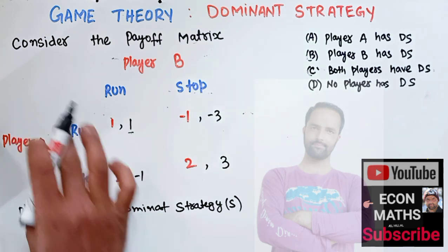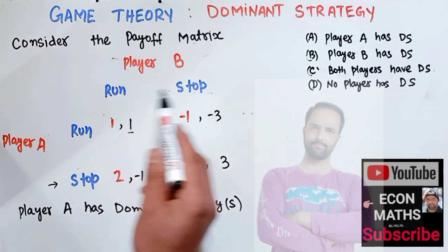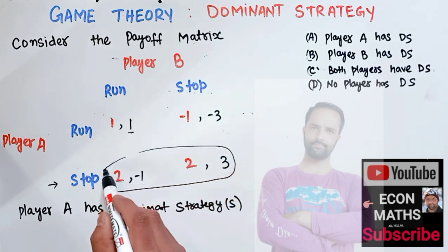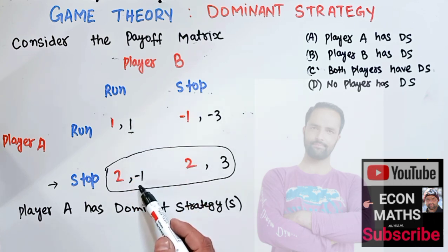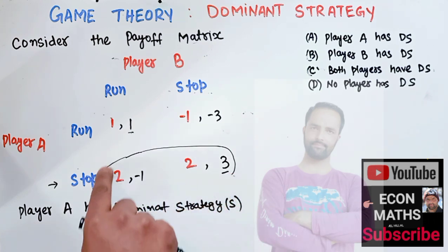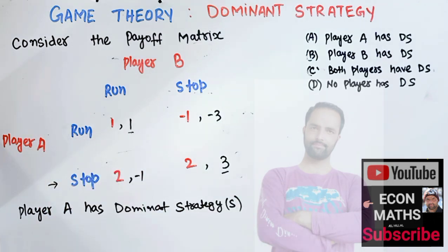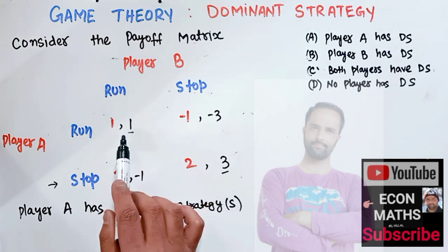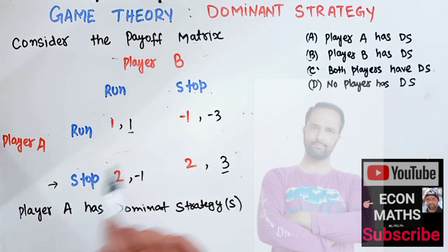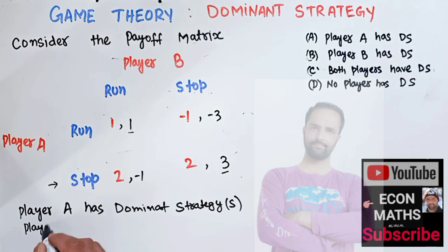Now let us see what happens when player A chooses to stop. Player B again has two options: run or stop. Here run gives him a payoff of negative 1, stop gives him a payoff of 3. So player B's choice changes with player A's choice — when player A runs, player B runs; when player A stops, player B stops. That means player B has no dominant strategy.